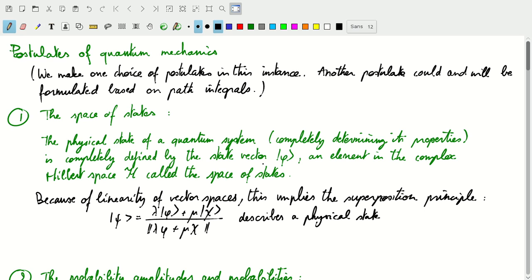That also means that if there is linearity in the vector spaces, which there is in our definition of Hilbert spaces, then there is a kind of superposition principle that relates two states phi and chi to a new state psi. This new state psi will have to describe a physical state just like phi and chi describe a physical state.